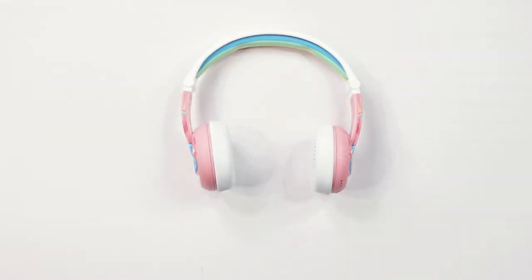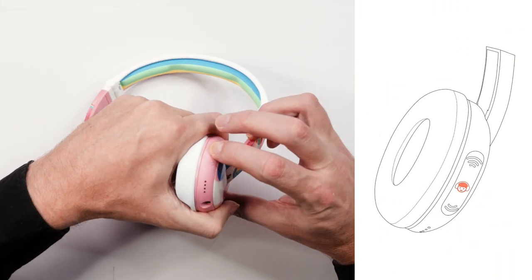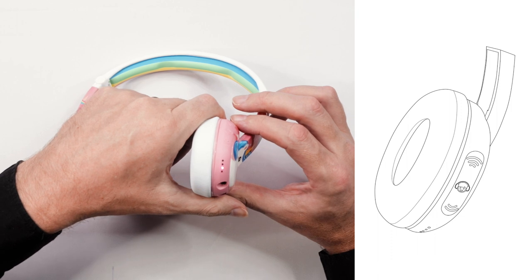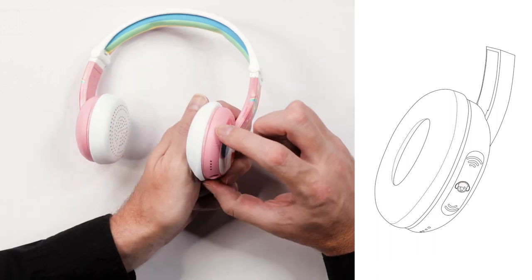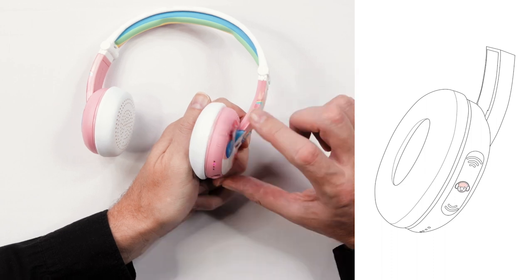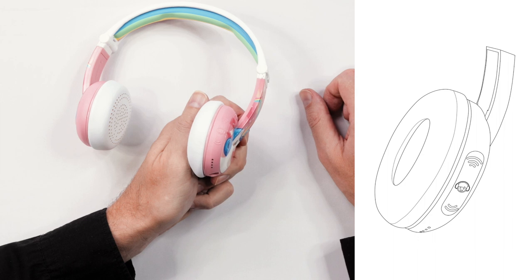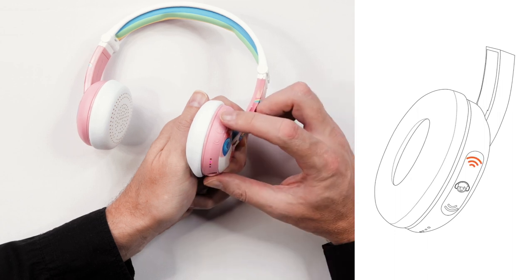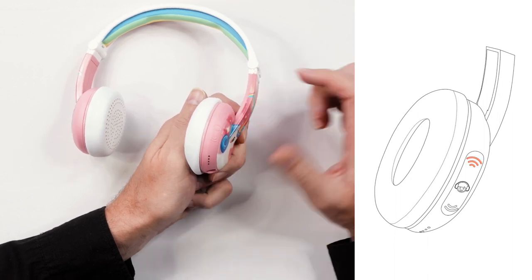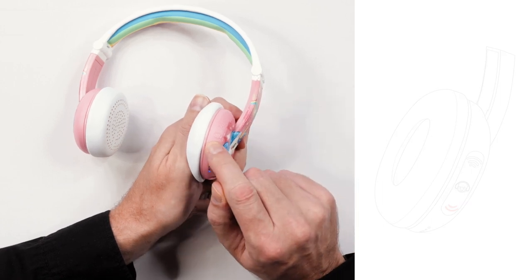To play music or video, press the multi-function button one time. To pause music or video, press the multi-function button one time. To resume playing, press the multi-function button again. To go to the next track, press and hold the volume up button for one second. To go back a track, press and hold the volume down button for one second.